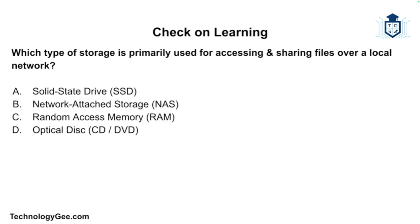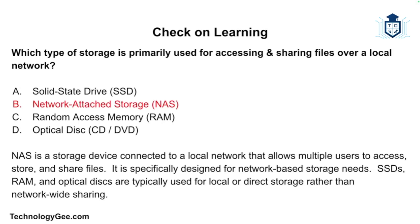Final question — which type of storage is primarily used for accessing and sharing files over a local network: a solid state drive, network attached storage, random access memory, or an optical disk? The correct answer is network attached storage. NAS is a storage device connected to a local network that allows multiple users to access, store, and share files. It is specifically designed for network-based storage needs. SSDs, RAM, and optical disks are typically used for local or direct storage rather than network-wide sharing.